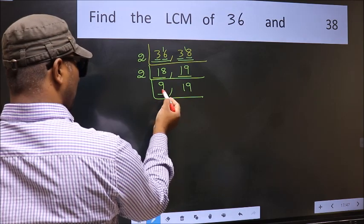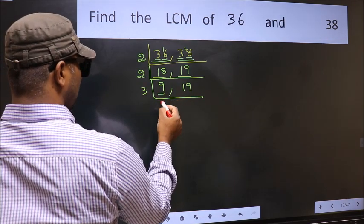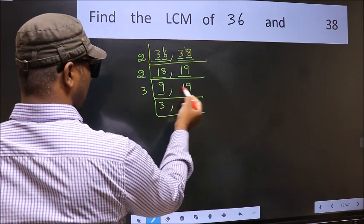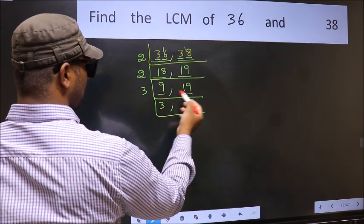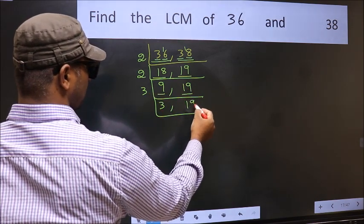Now here we have 9. 9 is 3, 3 is 9. The other number 19, not divisible by 3, so we write it down as it is.